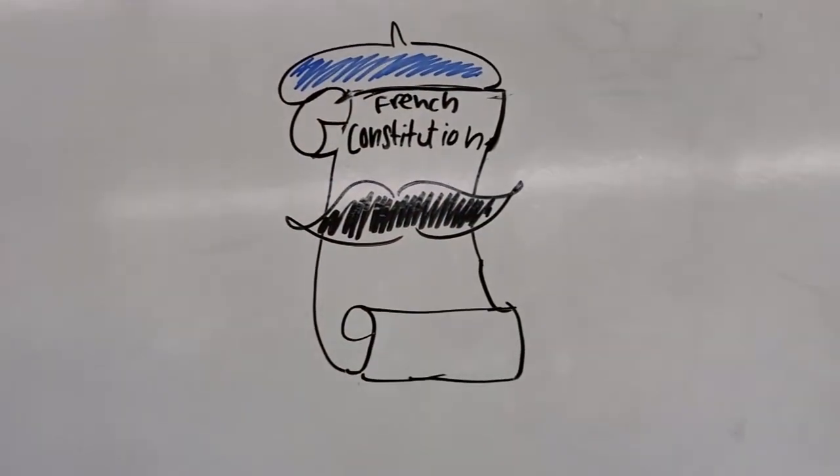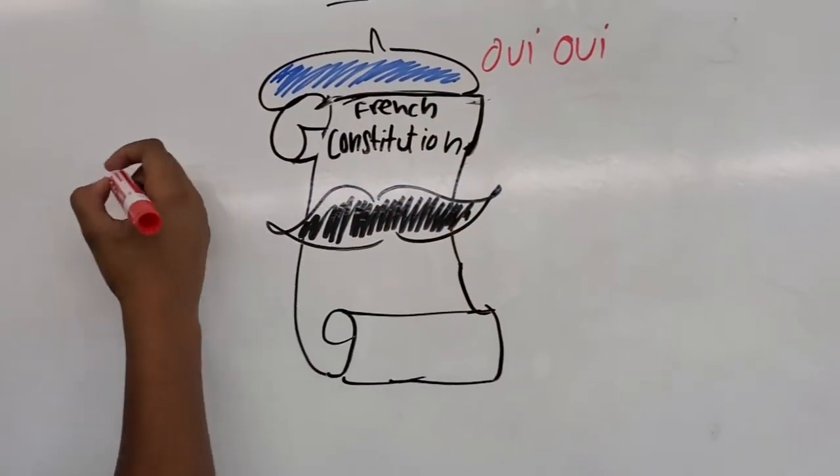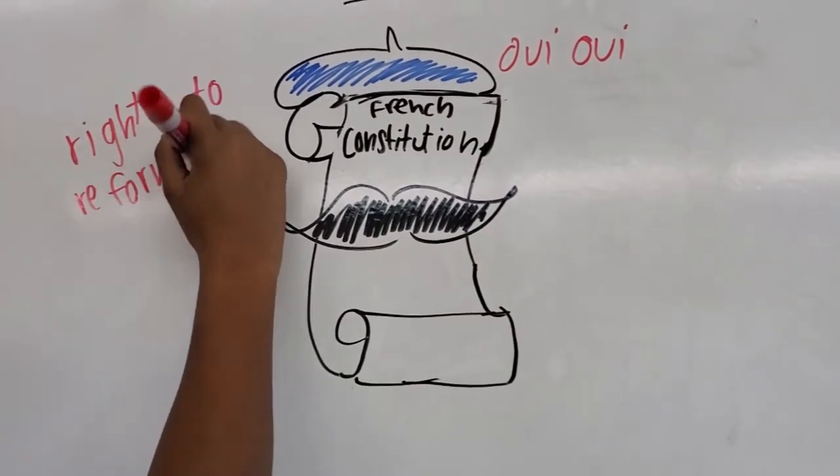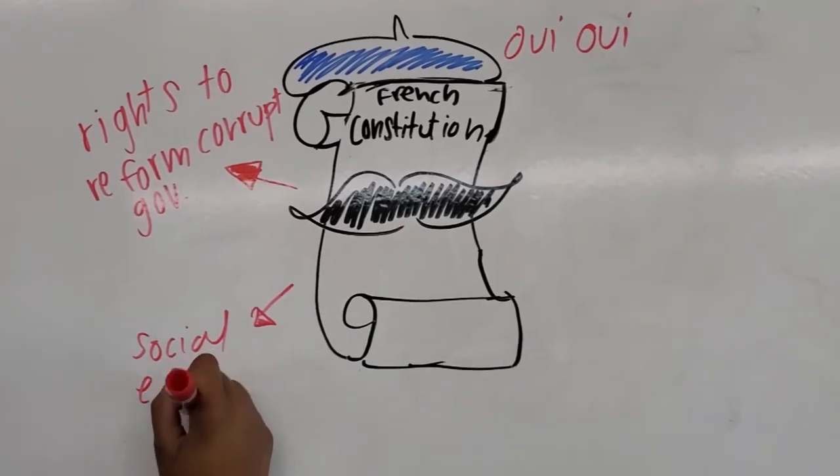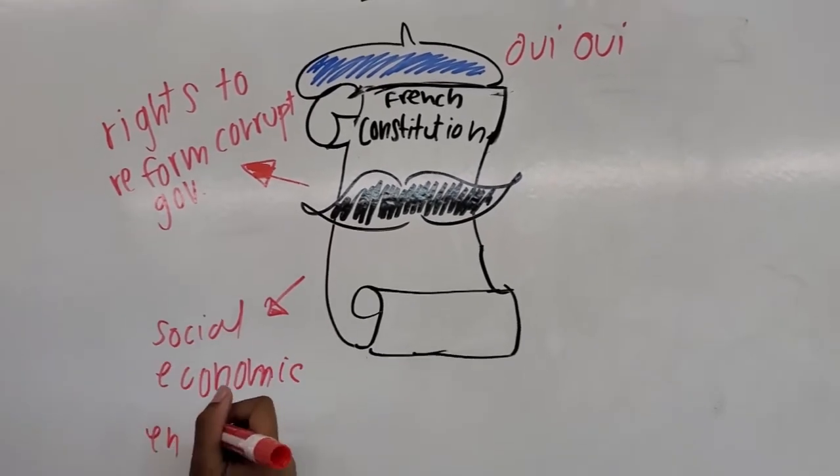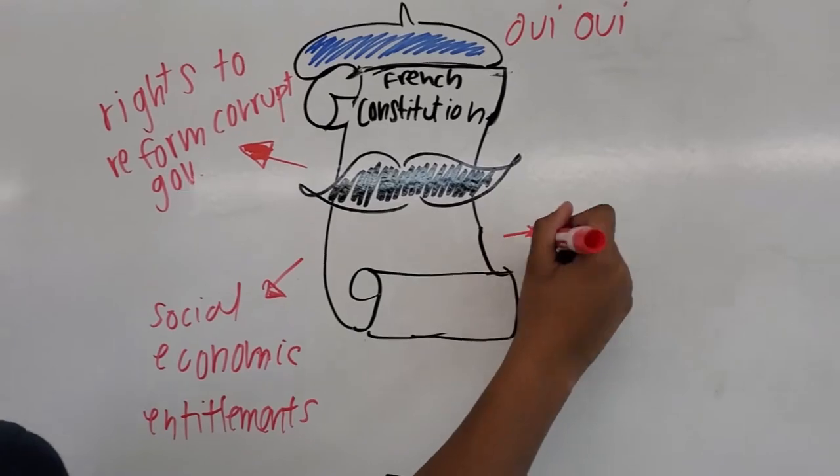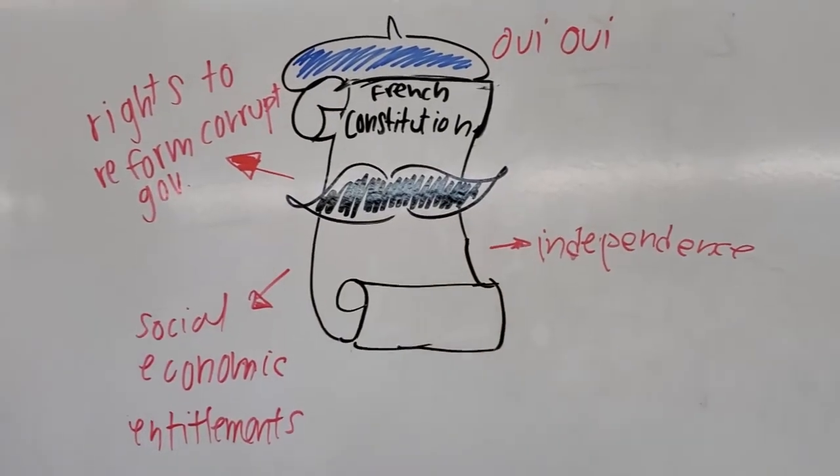Getting into the specifics, the French Constitution of 1791 guaranteed the independence of men, new economic and social entitlements, the right to go against any corrupt governmental system, limitations to the powers of the government, and the abolishment and reformation of an inadequate government.